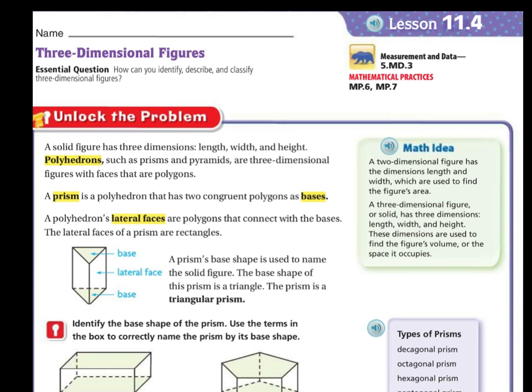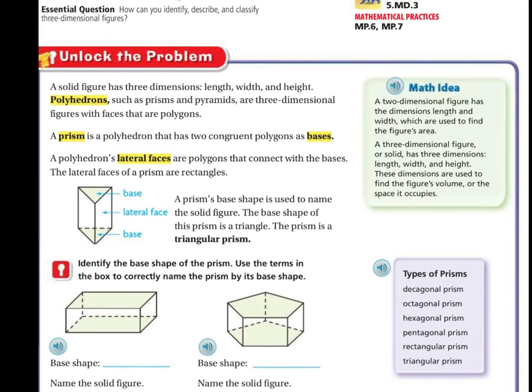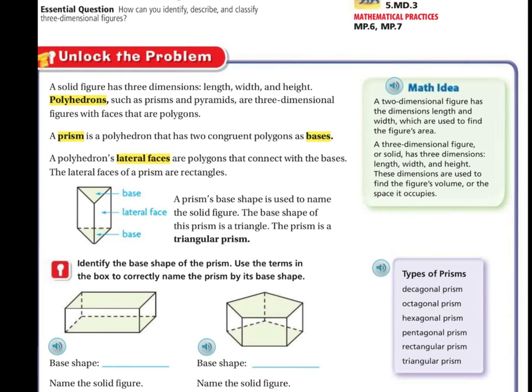So if the base, for example, on this one, the base is a rectangle, therefore it's a rectangular prism.